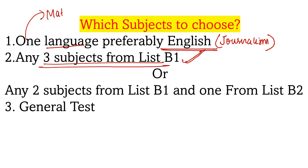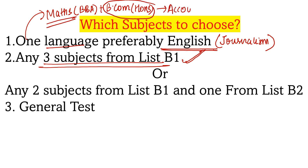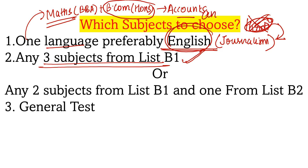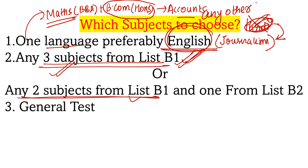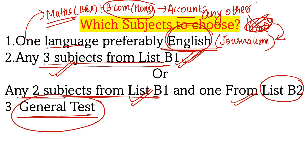To be eligible for both BBA and B.com Honors, choose subjects that match both requirements. The best strategy is to choose three subjects from B1, or two from B1 and one from B2. Preferably choose subjects you have already studied in boards, so you have less new material to prepare and your performance will be better. If you give a general test, it opens eligibility for many more exams.